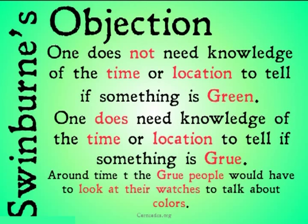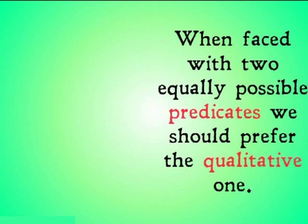Around time t, the grue people would have to look at their watches in order to talk about colors, whereas the people who believe in things like green and blue would not need to. Therefore, grue is superfluous, and if we can, we should have qualitative predicates instead of locational predicates. So when faced with two equally possible predicates, we should prefer the qualitative one.